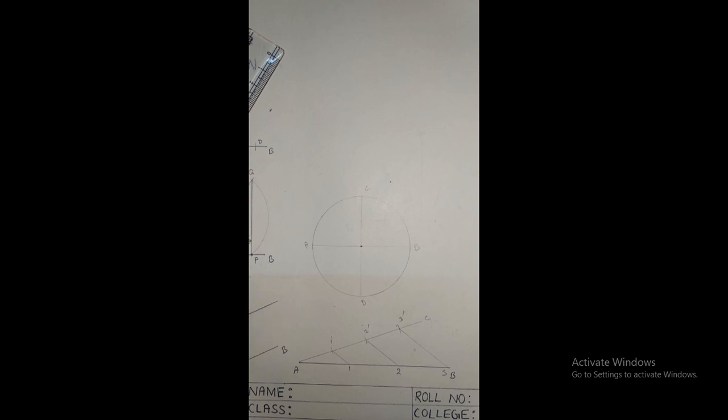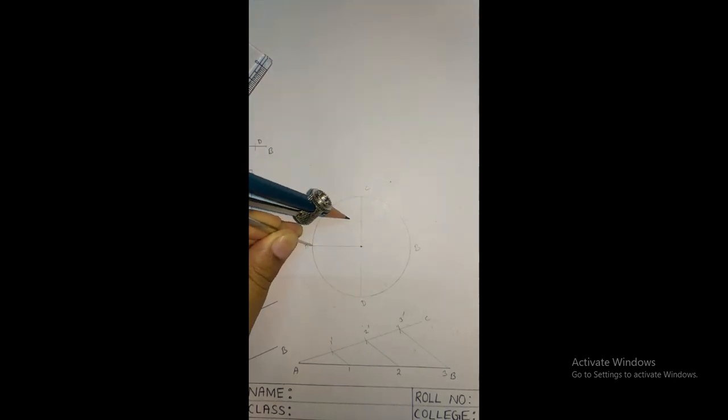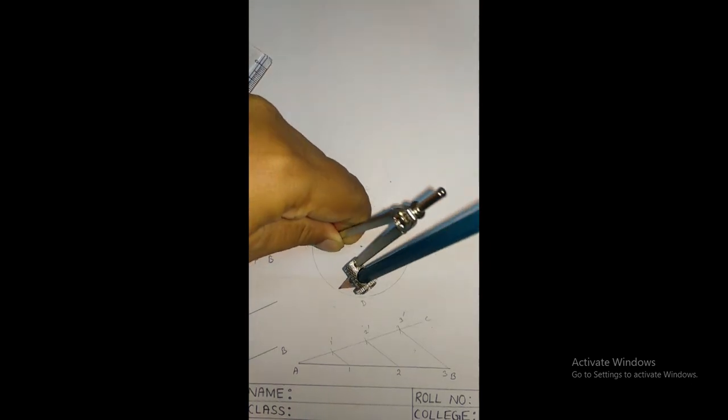Now, with center at A and radius equal to the given radius, I have not changed the radius, you can see. This is the given radius, so you have to draw an arc in both sides, here and here.